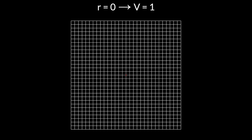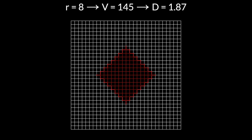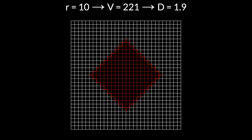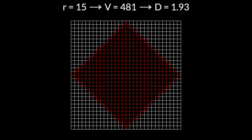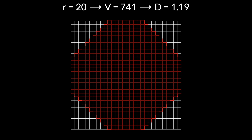So let's try measuring the dimensionality of a larger graph. This starts exactly as the smaller graph did, with numbers that are too small because the graph is not continuous. But the numbers trend towards the right answer — r equals 5 gives us v equals 61, which gives us d equals 1.78. With this larger graph however we don't run into the edges so soon. r equals 10 gives us v equals 221, d equals 1.9. r equals 15 gives us v equals 481, d equals 1.93. When we do run into the edges, r equals 20 gives v equals 741 and d falls to 1.19.